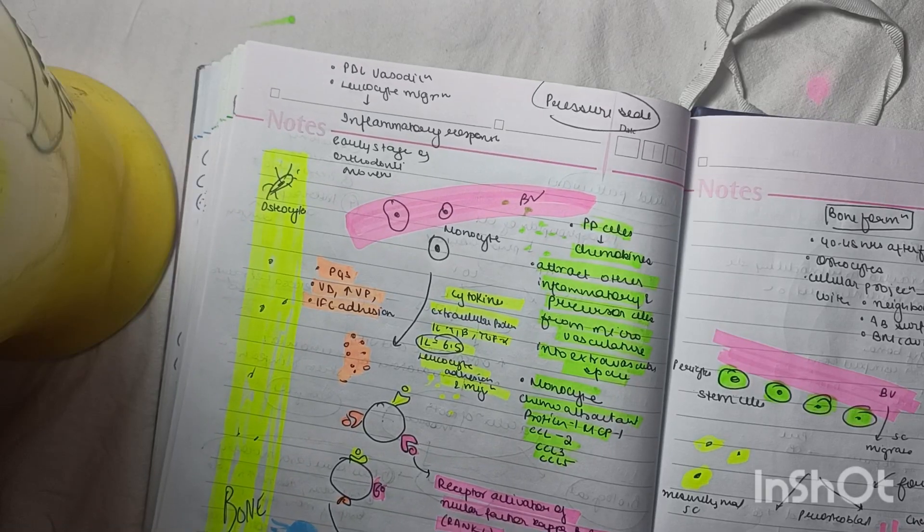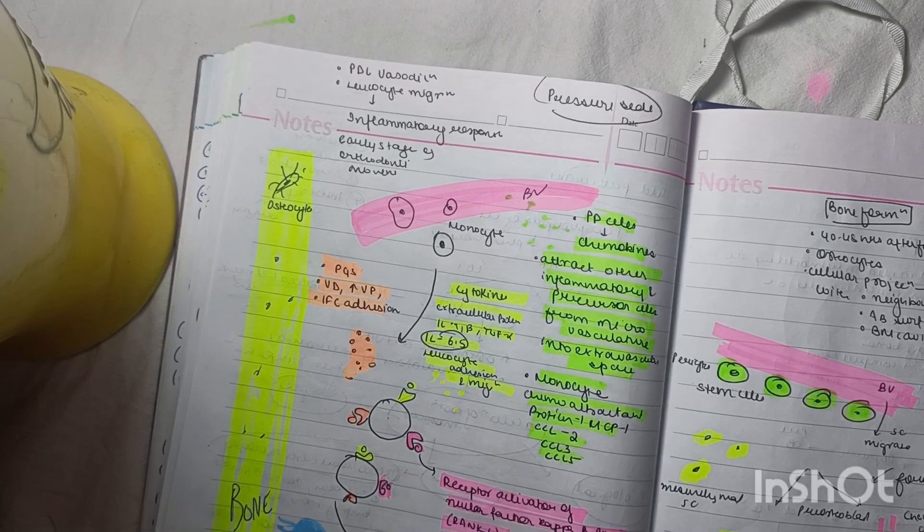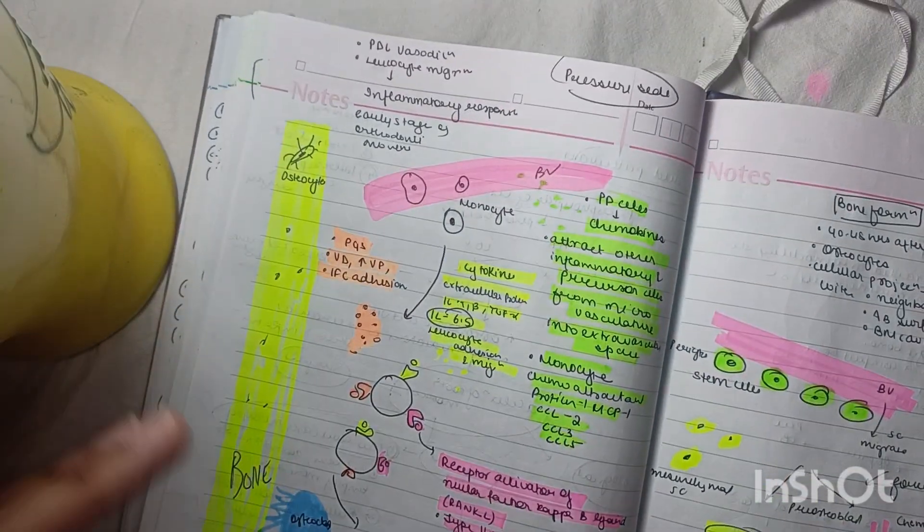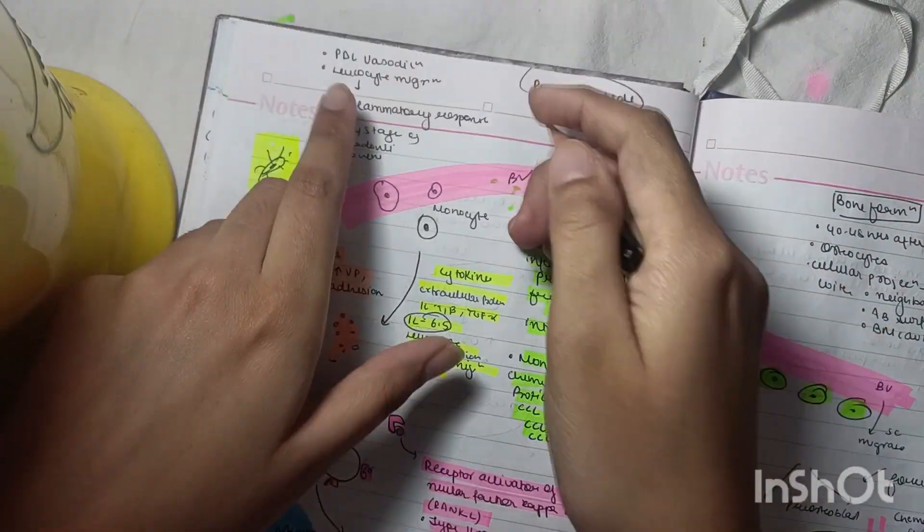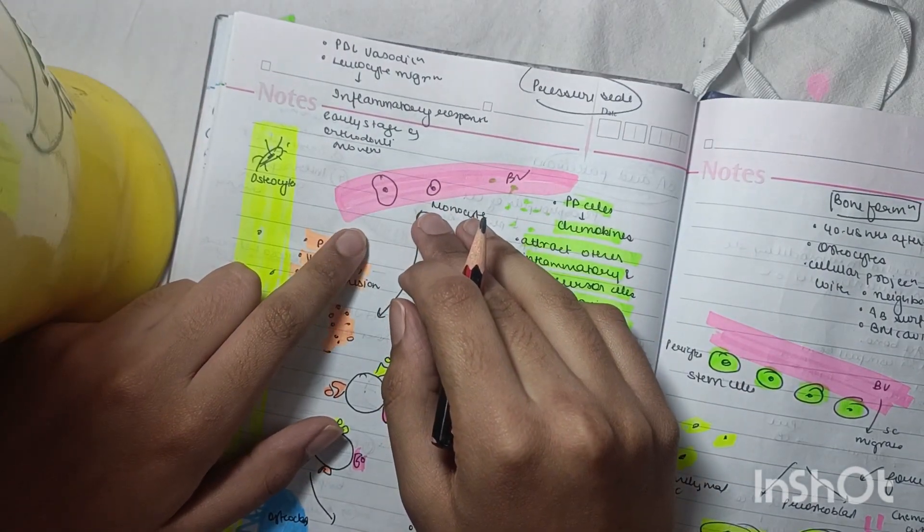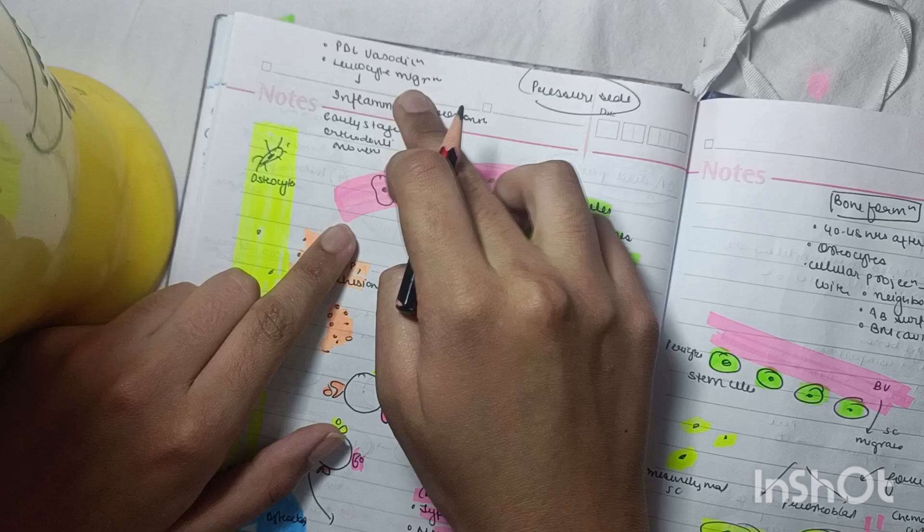In this video, I'll be explaining a diagram which you must draw in your exam. Pressure side and tension side - by the theory of Schwarz, we have a blood vessel. It is an inflammatory reaction, so leukocytes will migrate and there will be periodontal vasodilation on the pressure side.